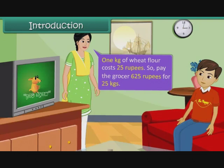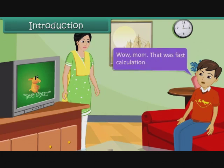1 kg of wheat flour costs 25 rupees. So pay the grocer 625 rupees for 25 kgs. Wow, mom! That was fast calculation.